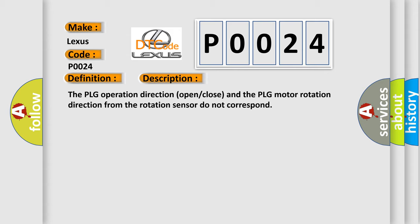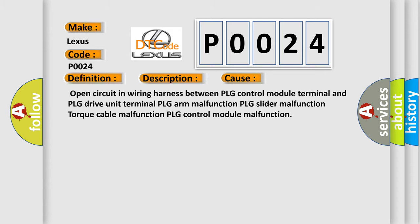The PLG operation direction open close and the PLG motor rotation direction from the rotation sensor do not correspond. This diagnostic error occurs most often in these cases: open circuit in wiring harness between PLG control module terminal and PLG drive unit terminal, PLG arm malfunction, PLG slider malfunction, torque cable malfunction, PLG control module malfunction.